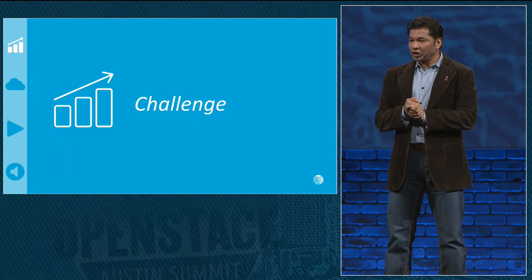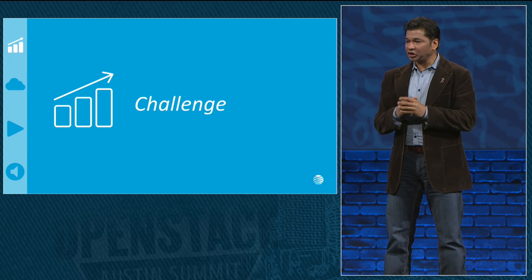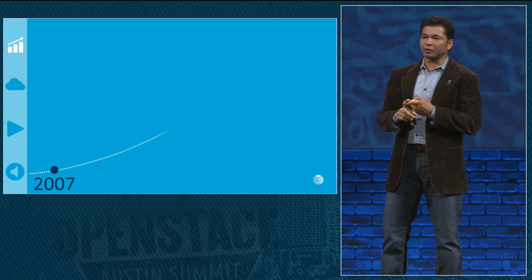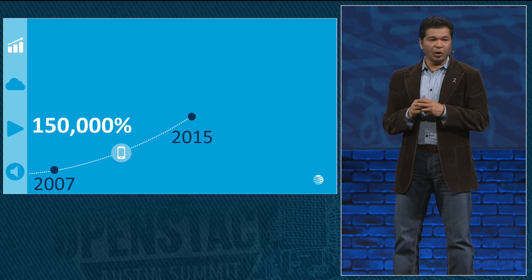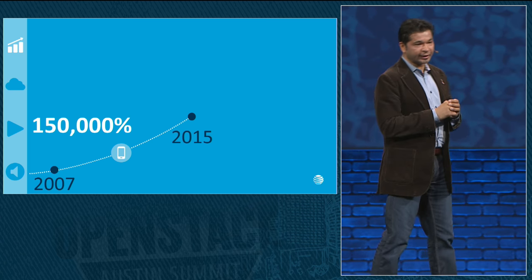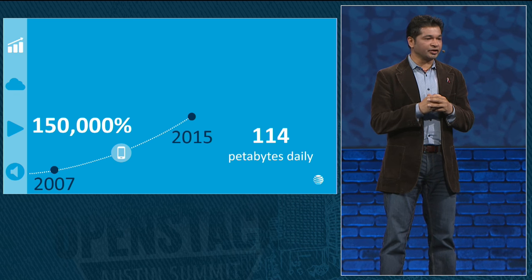The challenge. The rapid enhancements and advancements in communication services have resulted in numerous benefits for users and have spawned many new industries. All of this hyperactivity has created explosive growth in network traffic. From 2007, our mobile data traffic grew 150,000%. On an average day, 114 petabytes of data traverses our network.